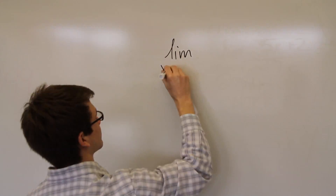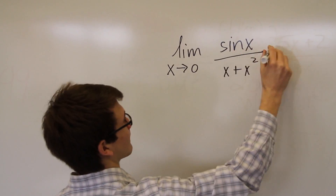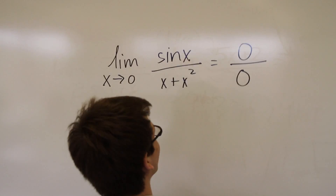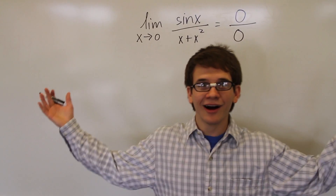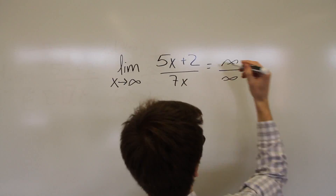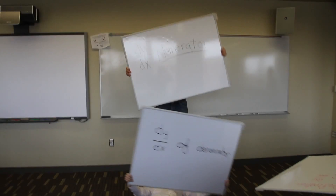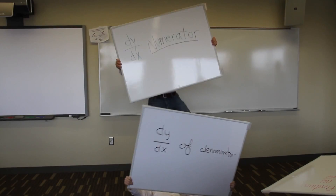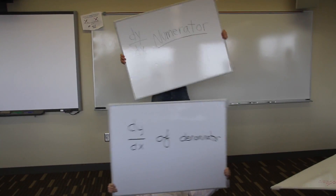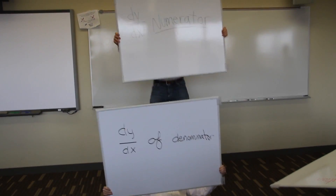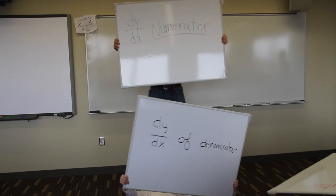Work it LHOP style. When you have a function and it's indeterminate — ratio zero over zero when you take the limit, positive infinity over infinity as n goes to infinity — just use LHOP's rule. Take the derivative of the numerator right away, and take the derivative of the denominator next.